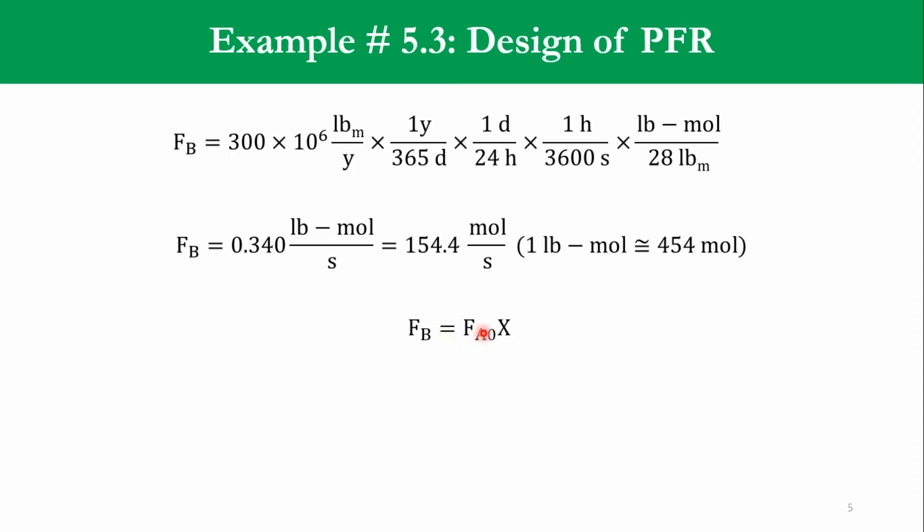By stoichiometry, F of B is equal to F of A naught X. This is our basic concept from the stoichiometry chapter number 4 or building block number 3. So we know X is 0.8, F of B is 154.4, so accordingly we get F of A naught is equal to 193 mole per second. So the feed of ethane is 193 mole per second.